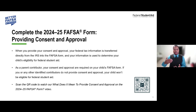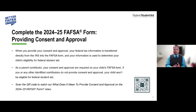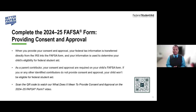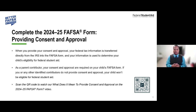When providing consent and approval, you are simply allowing the transfer of federal tax information (FTI) onto the FAFSA form. If anyone declines consent and approval, they must provide information manually and the student would not be eligible for federal financial aid. Declining also prevents the Department of Education from requesting FTI from the IRS. All of these steps are required for a student to be eligible for federal, state, and institutional funding.